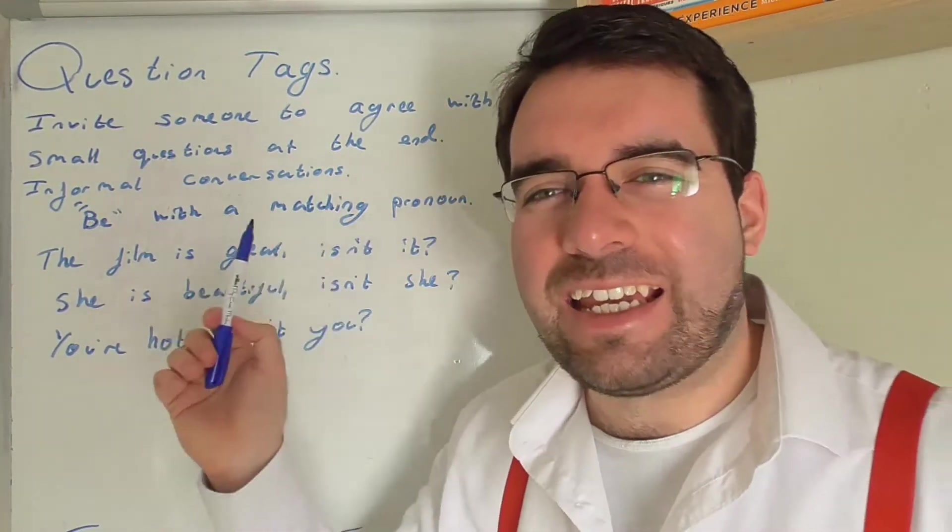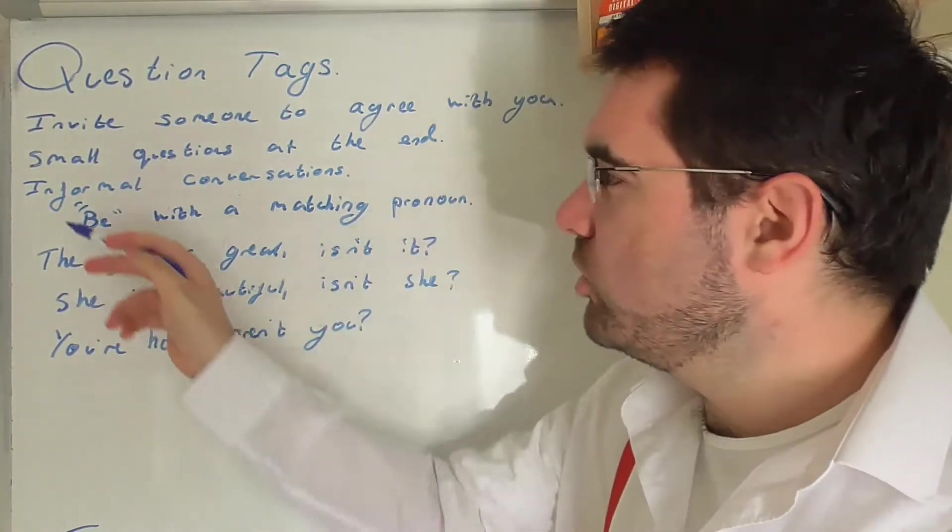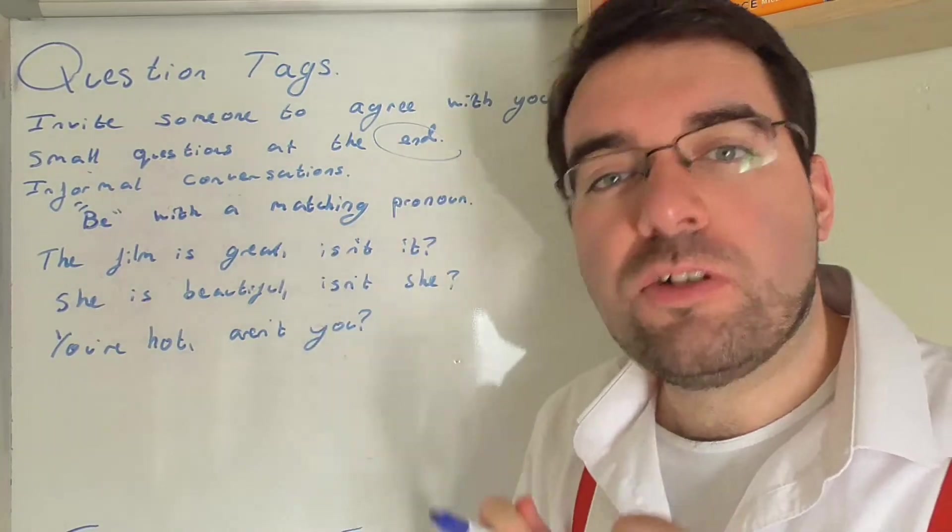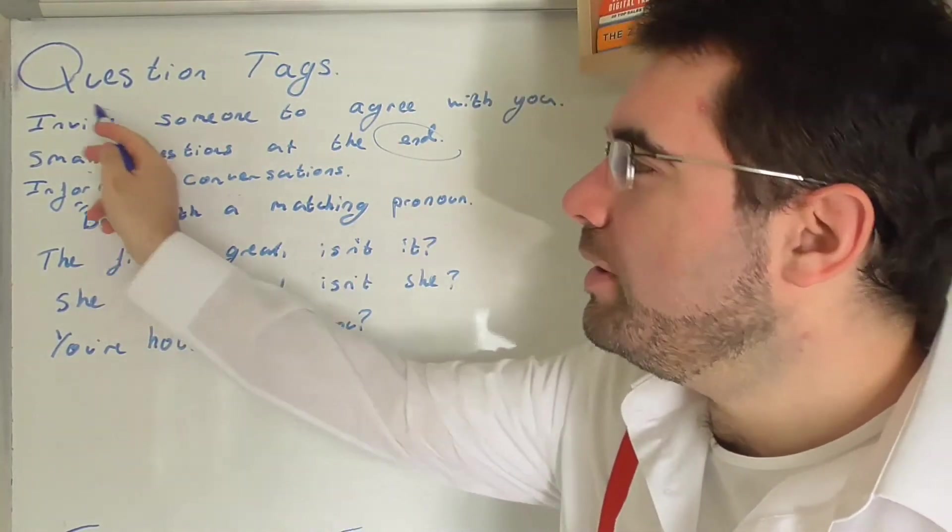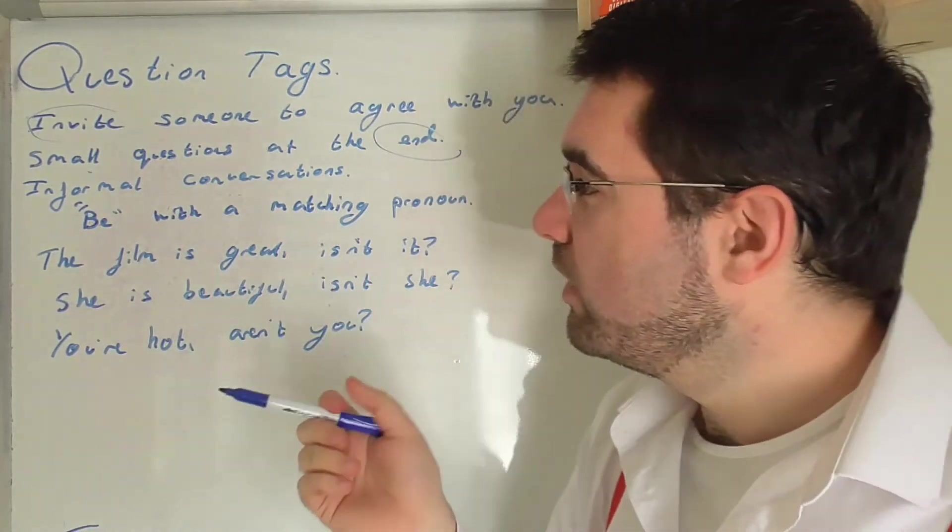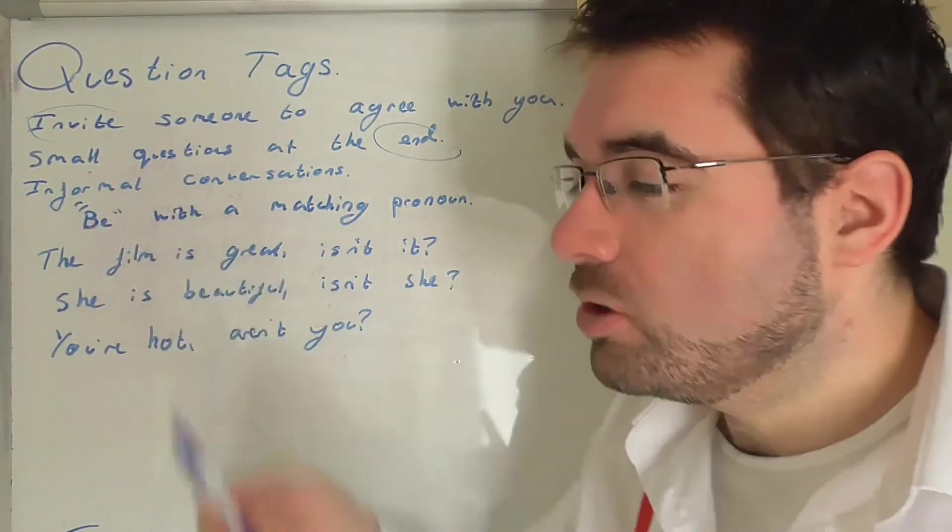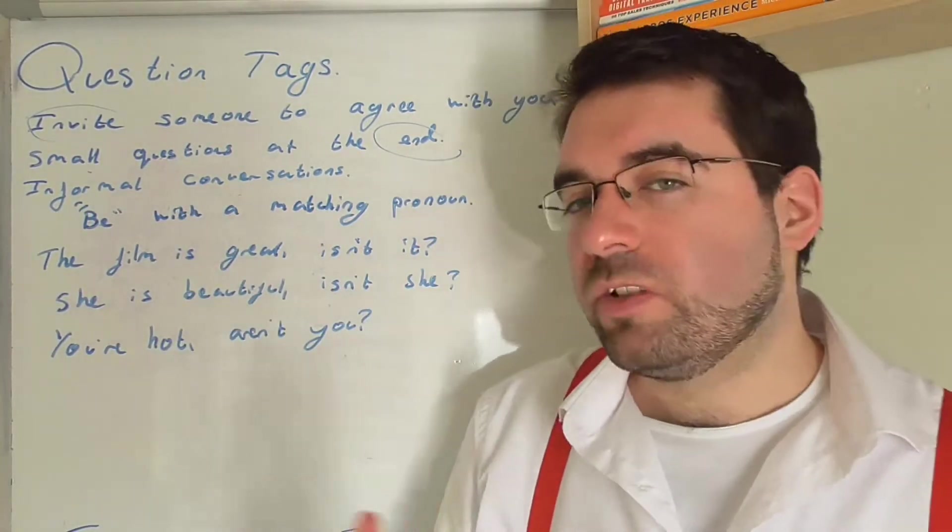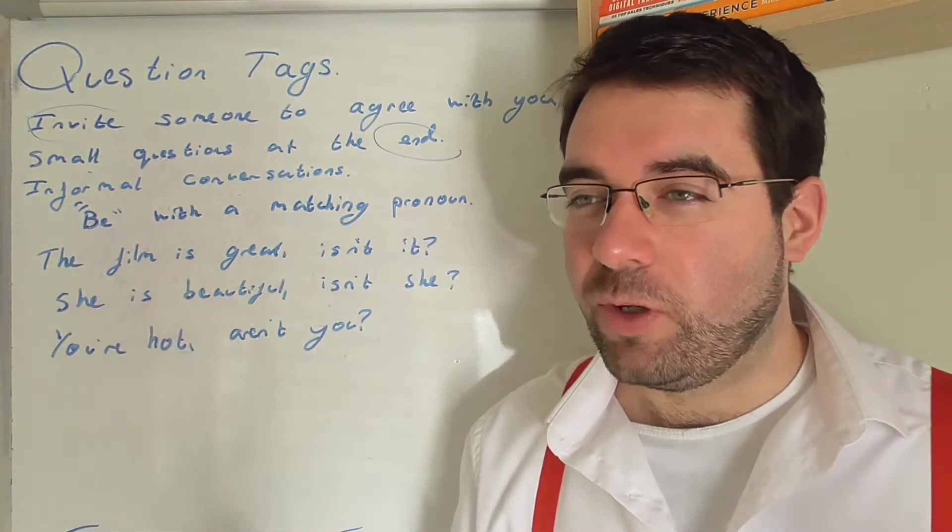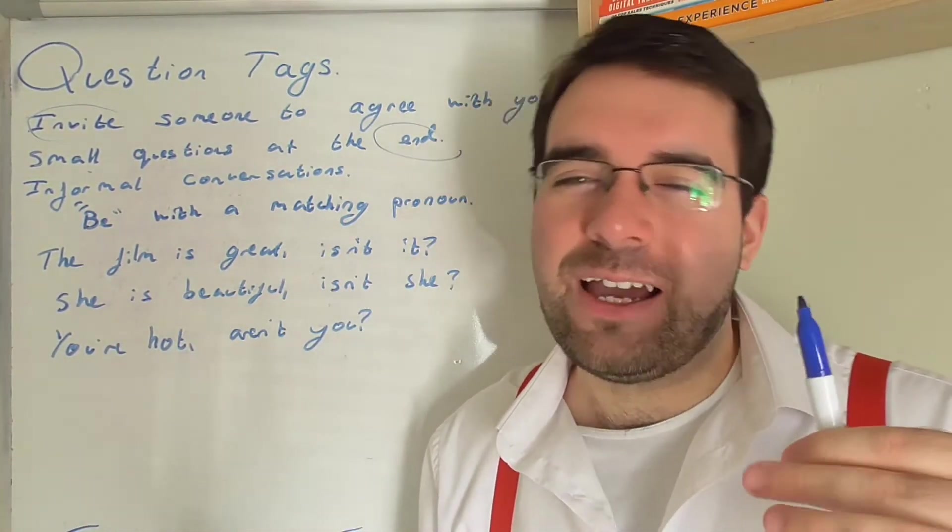Let's get started. Let's look at question tags. They are small questions at the end of a question you use to invite someone to agree with you. We could say, mainly in informal conversations, so general chit-chat, conversational, with your friends at the pub, as opposed to at court, for example, or in front of a judge, or at the parliament.